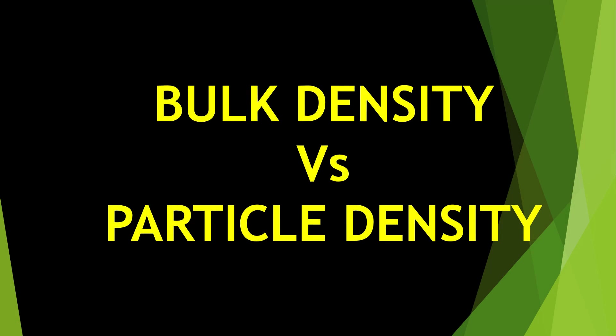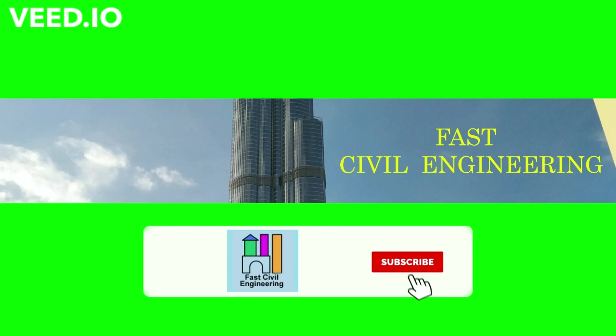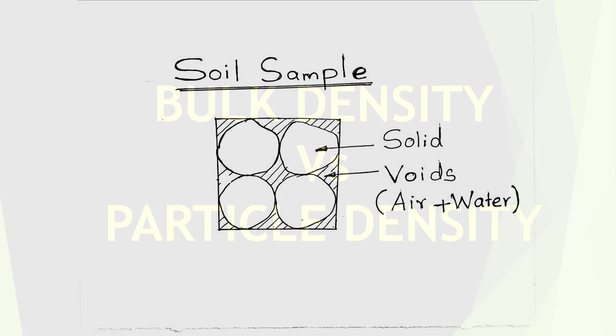Bulk density versus particle density. Consider this soil sample. For understanding purposes, there are four soil particles shown in the video. Those are solid portions, hatched portions called voids, and voids filled by air and water.